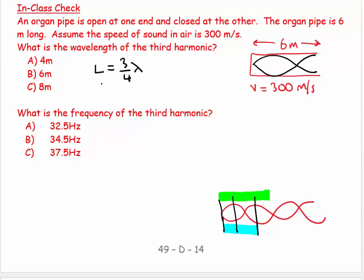So I can say 6 is equal to 3 over 4 lambda, so lambda is equal to 6 times 4 over 3. Lambda is equal to 8 meters.